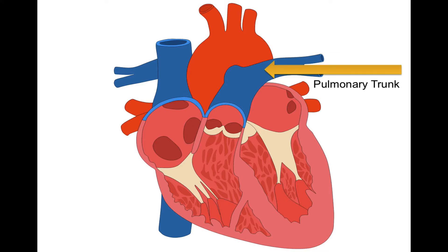Then we have the pulmonary trunk, which is a major vessel. The right ventricle actually pumps blood into the pulmonary trunk to take blood into the lungs. Recall that we have a right heart and a left heart — the pulmonary trunk is the right heart, whereas the aorta is the left heart.